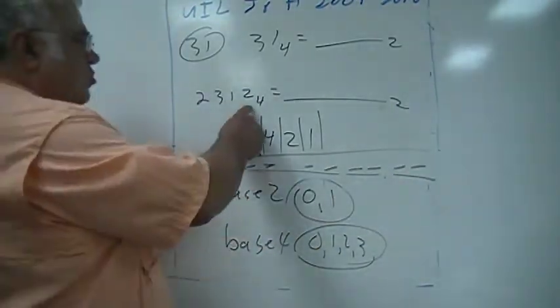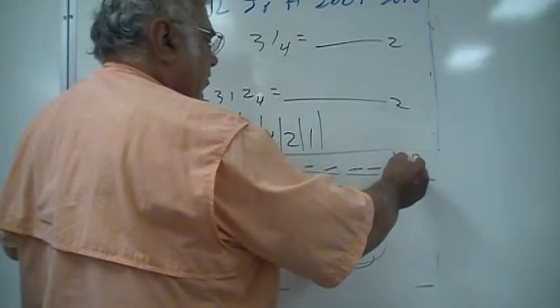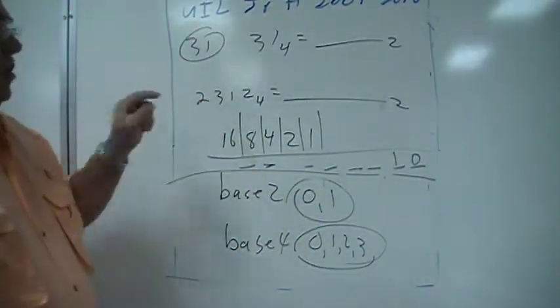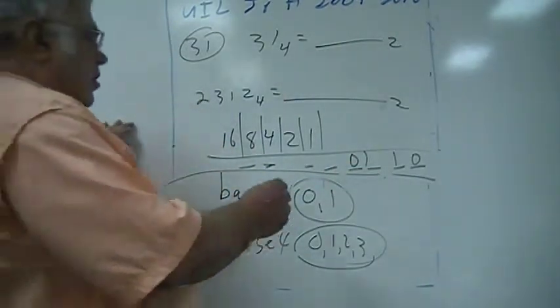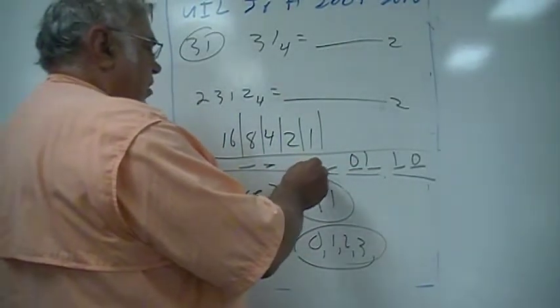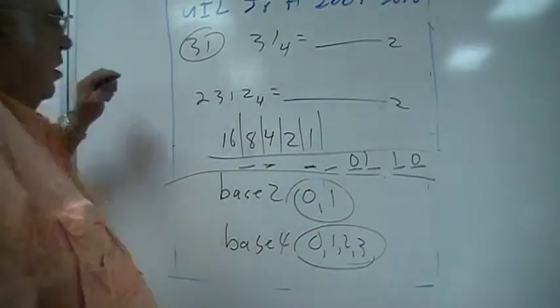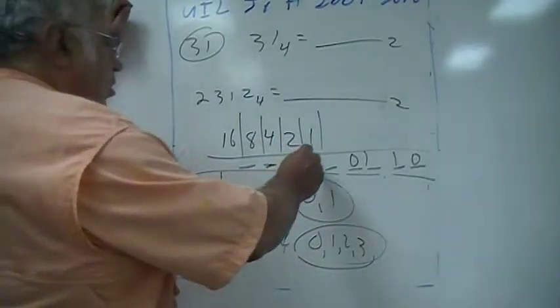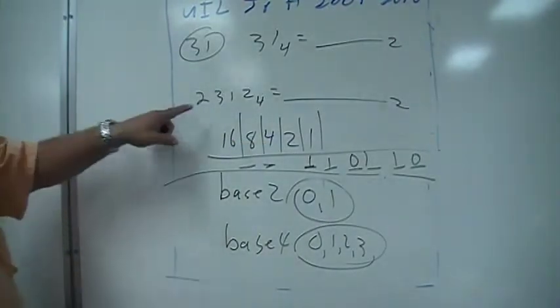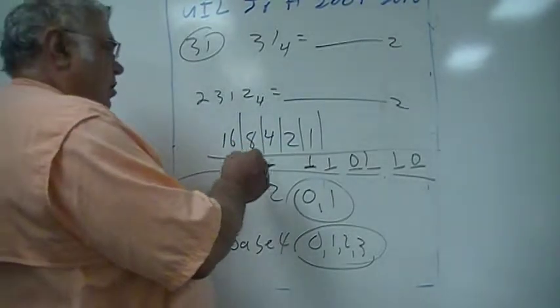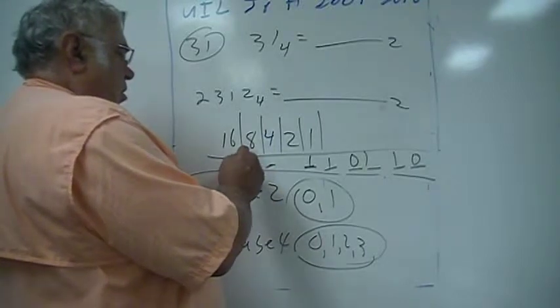So for 2, it would be 1, 0. And for 1, it would be 0, 1. And for 3, it would be like this - 2 and 1 is 3. And for 2 again, it would be 1, 0.